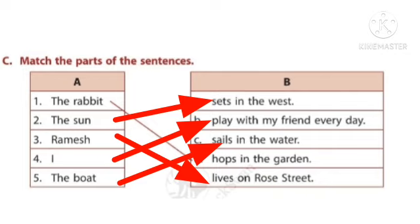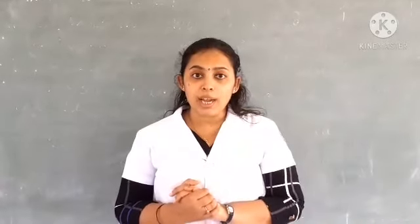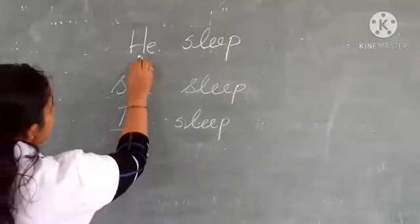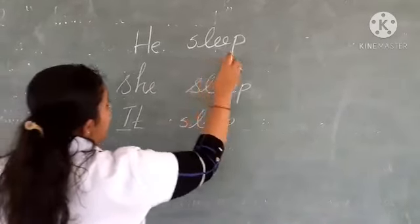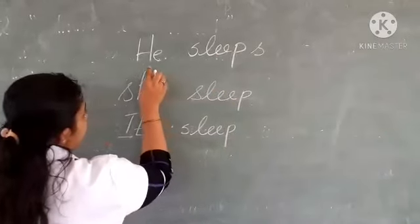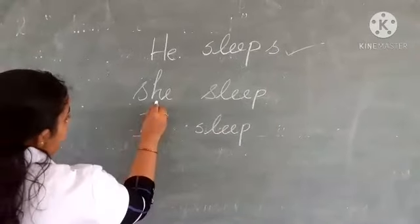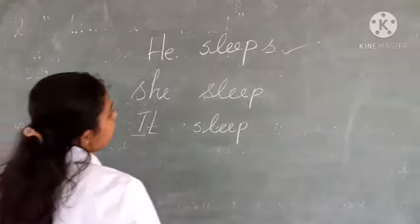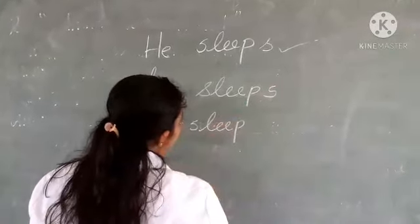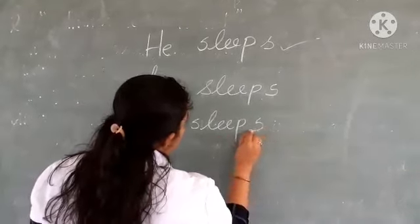Children, we need to add S or ES with the verb when using it with a singular pronoun. He is a singular pronoun, so: he sleeps — we add S. She is a singular pronoun — she sleeps. It is a singular pronoun — it sleeps, we add S.